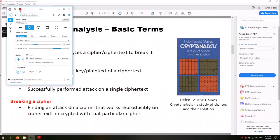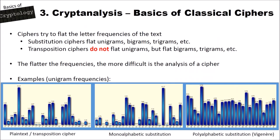What makes ciphers secure? The developers of ciphers try to flatten the letter frequencies of the text so that you cannot make use of them. This works more or less well depending on the cipher. Substitution ciphers flatten unigrams, bigrams, trigrams, and so on, but transposition ciphers do not flatten unigrams — if you transpose the text, the unigram frequencies remain the same. Transposition ciphers do however flatten bigrams, trigrams, and so on. As a rule of thumb: the flatter the frequencies a cipher produces, the more difficult the analysis of that cipher.